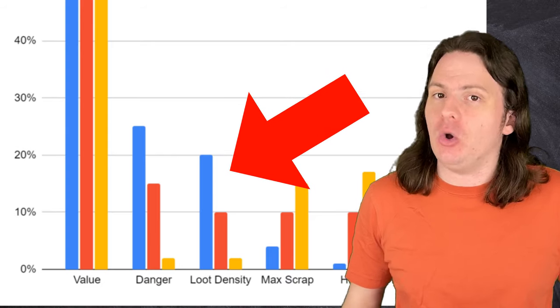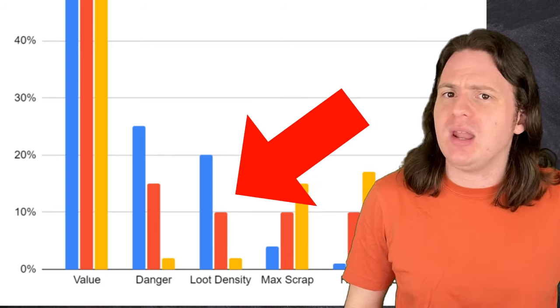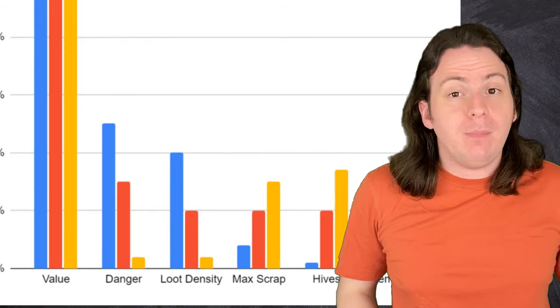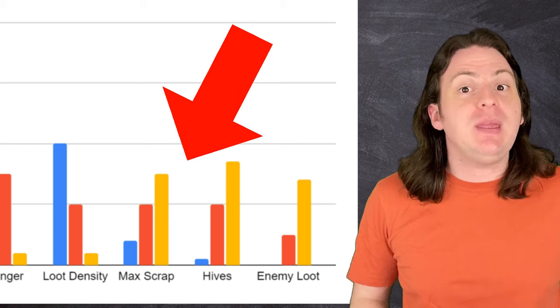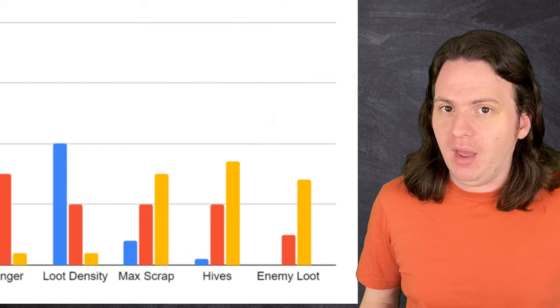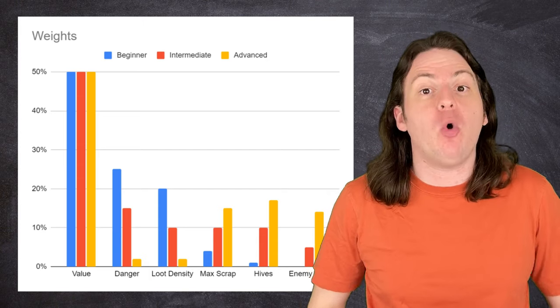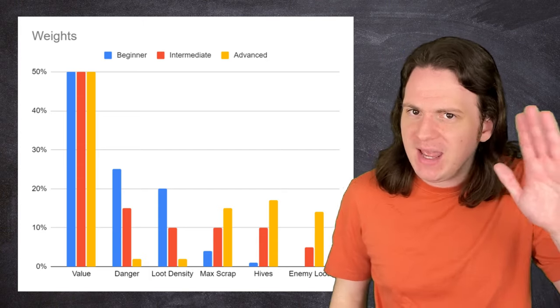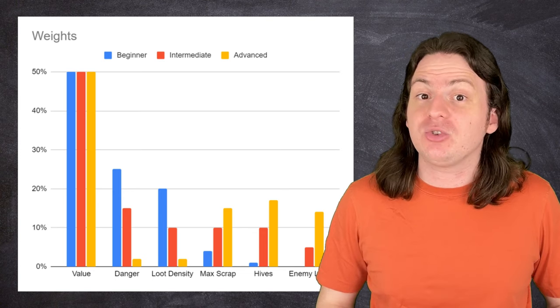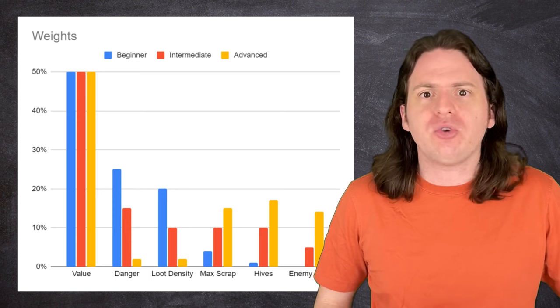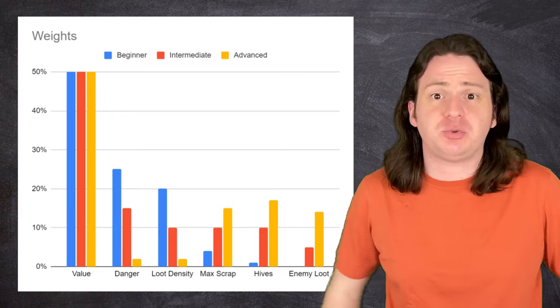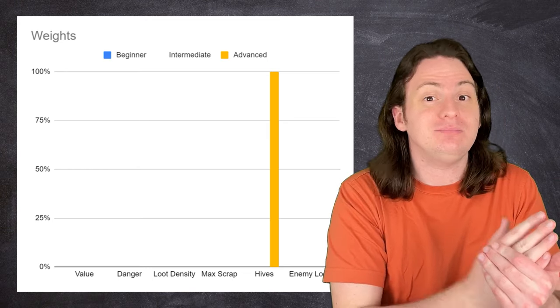As the skill level increases, the loot density and danger weights go down. As you become better at the game, you can confidently spend more time in the facility without dying, so the loot being tightly packed isn't as essential. Meanwhile, scrap maximum, enemy loot, and hives become much more important as you become better able to capitalize on them. Hopefully, this tiered weighting system will make the final results more applicable to a wider range of people. But if you're still not happy with my weights, great news. I've included a link to my spreadsheet with all this data in the description down below. If you want, you can throw your own weights in, and it will automatically calculate new scores for you. If you're the kind of guy who says, screw everything else, we're going beehives only, guess what? You can do that.